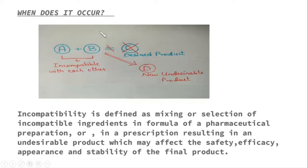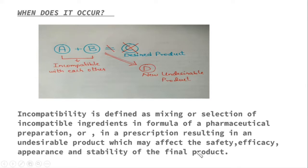For instance, if we have two reactants A and B that are not compatible with each other, the desired product will not be formed. Rather, a new undesirable product will be formed. This may affect the safety, efficacy, appearance, and stability of the final product. This is incompatibility.